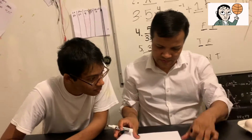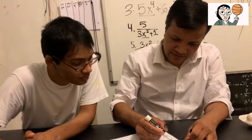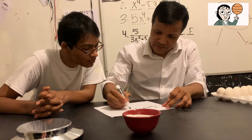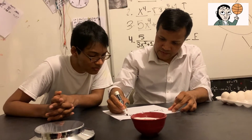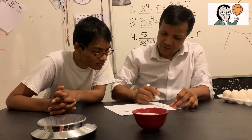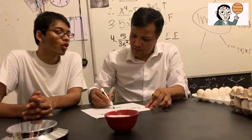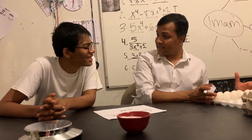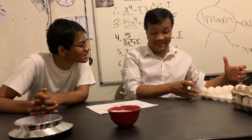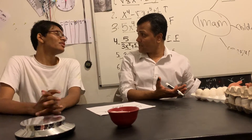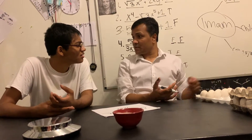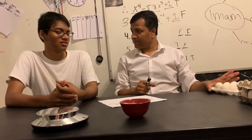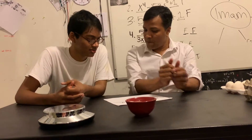Amount of substance is equal to mole, right? The SI unit for amount of substance is mole. So amount of substance is the number of things — number of eggs, number of things. It doesn't have to be eggs; it can be anything.